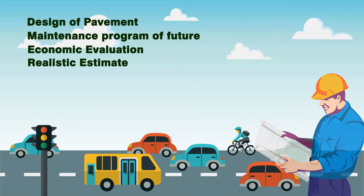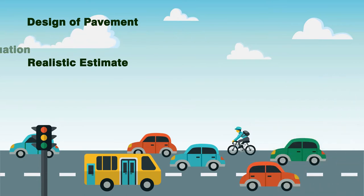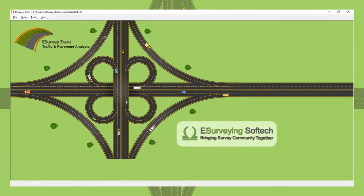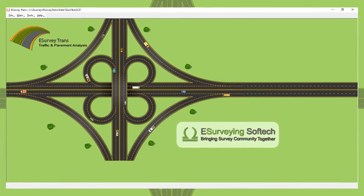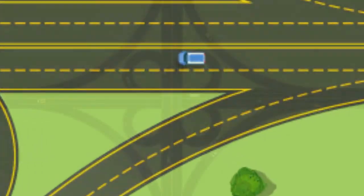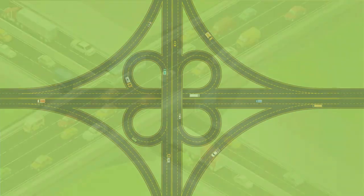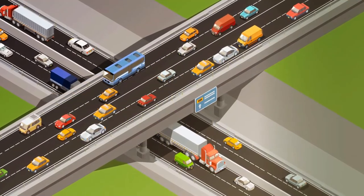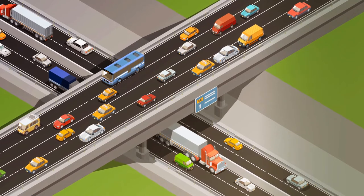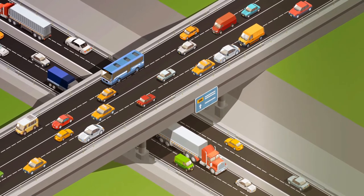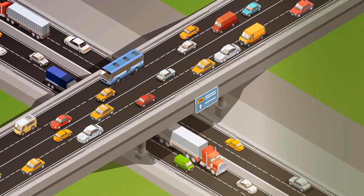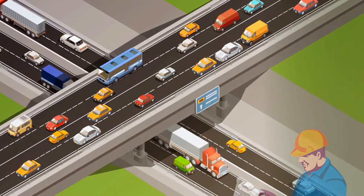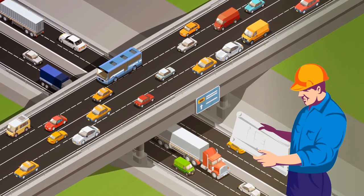The Traffic Analysis module of e-Survey Trans software is used to find commercial vehicles as per the last count. The Commercial Vehicles Per Day (CVPD) is used for arriving at the design traffic, and Passenger Car Unit (PCU) is used for estimating the required carriageway width.